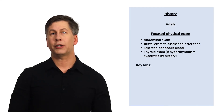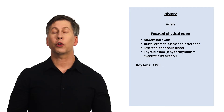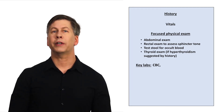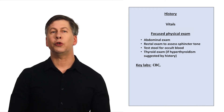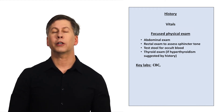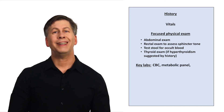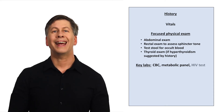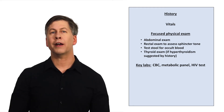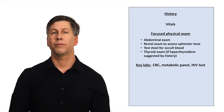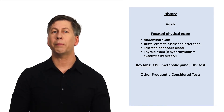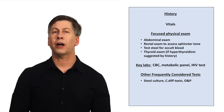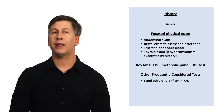Key labs in the workup include a CBC looking for leukocytosis seen in inflammatory etiologies, and for anemia as a consequence of nutrient deficiencies or GI bleeding. A basic metabolic panel isn't usually helpful for establishing the cause, but can check for electrolyte abnormalities and renal impairment caused by volume depletion. An HIV test is also usually ordered. Additional tests depending on the situation include a stool culture, C. diff toxin, and if the patient has a history of HIV or unusual travel, a stool O&P looking for parasites.